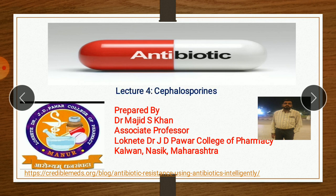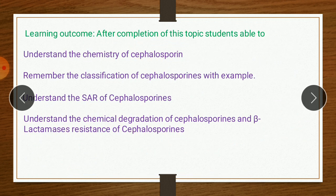In this lecture four, we will cover cephalosporins, which is one type of beta-lactam antibiotic. Learning outcomes: after completion of this topic, the student will be able to understand the chemistry of cephalosporins, remember the classification of cephalosporins with examples, understand the structural activity relationship, understand the chemical degradation, and beta-lactamase resistance of cephalosporins.